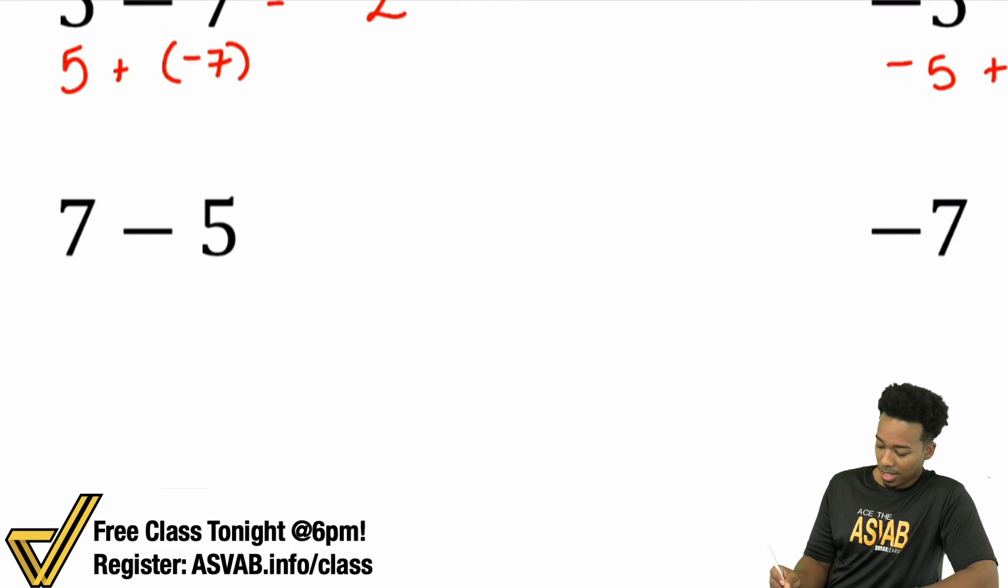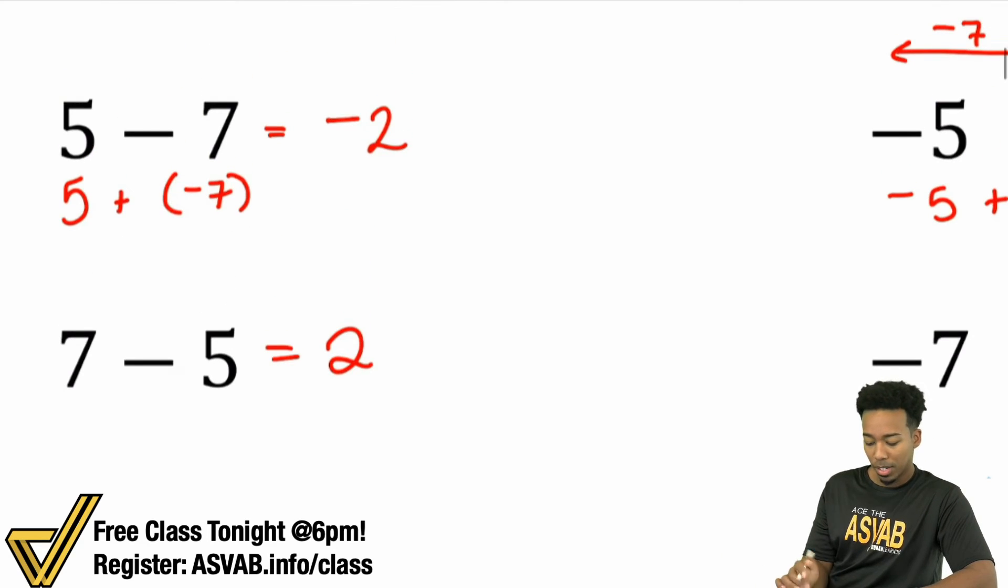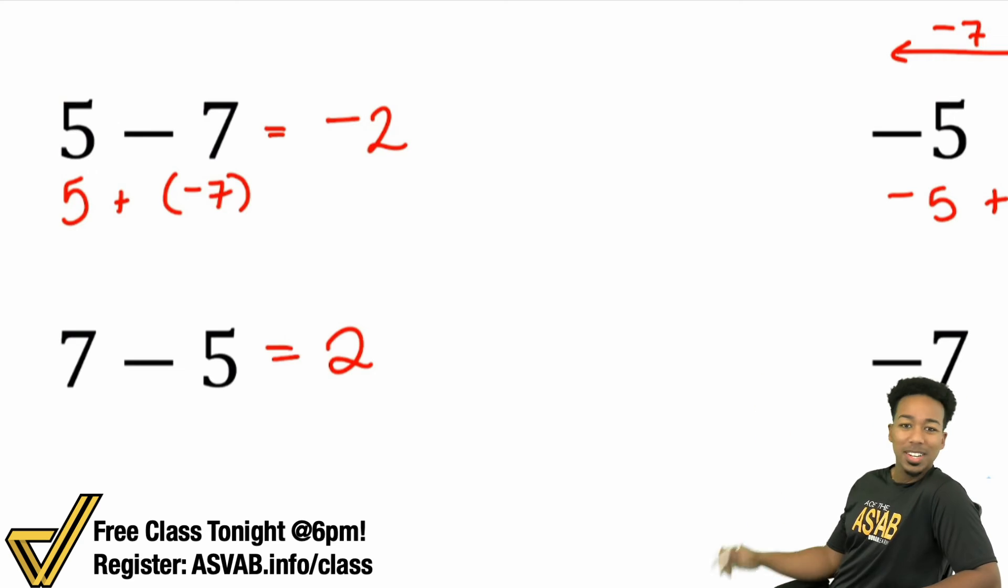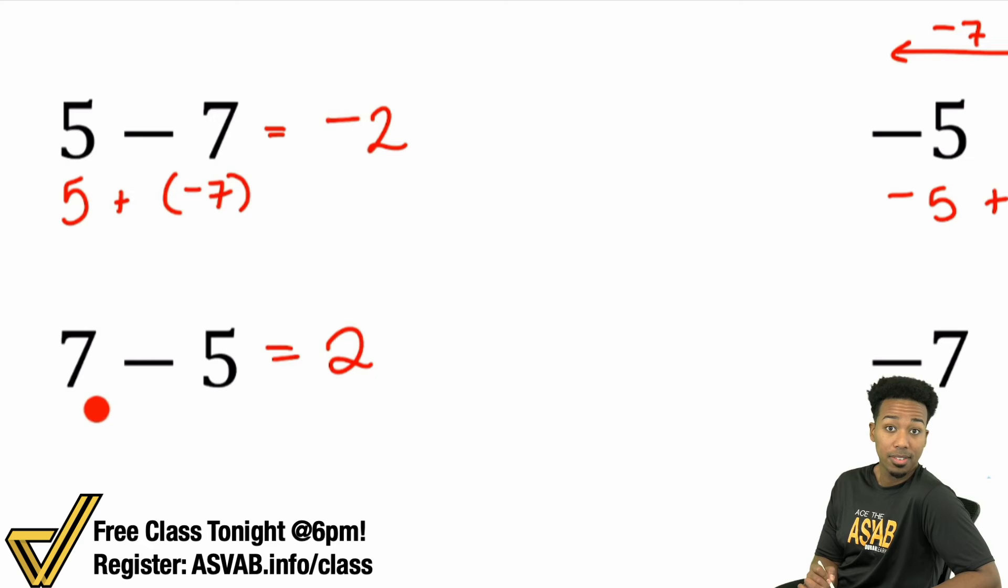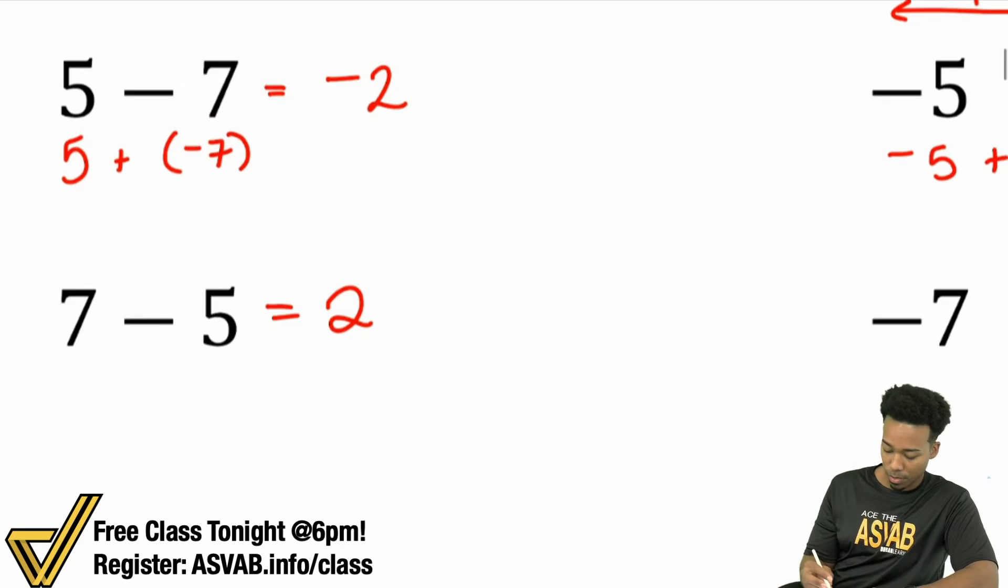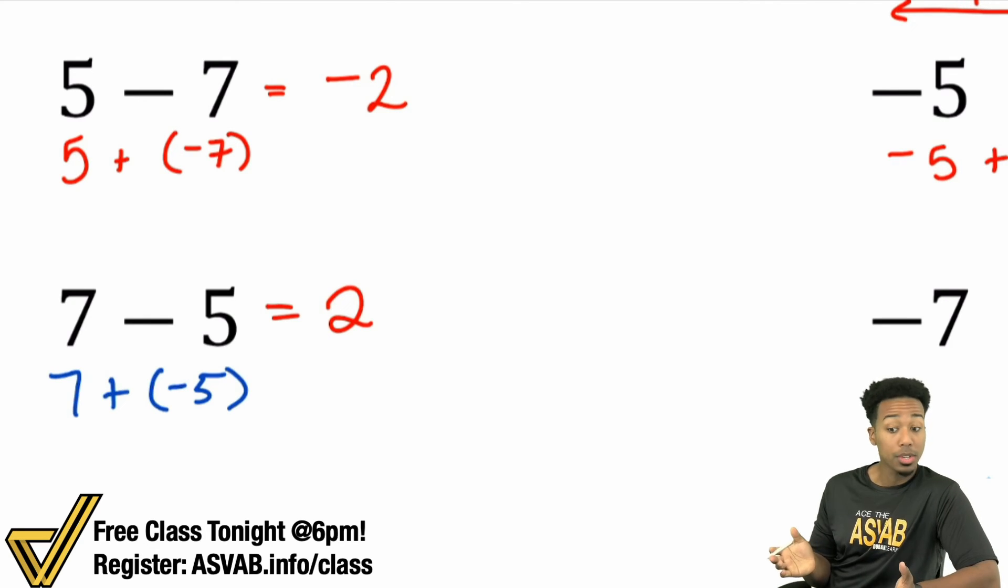So, 7 minus 5. Well, I think a lot of us can tell that that's going to be 2. But look at the difference here: 5 minus 7 versus 7 minus 5. Same answer, 2, but one of them is going to be negative because you're subtracting more than you have here, and here you're subtracting less than you have. But notice, you can consider both of these. You can consider 7 plus negative 5. It still follows the same exact rule. 7 minus 5 is 2, and you'll keep it positive 2 because the 7 is the bigger number.